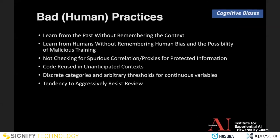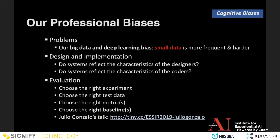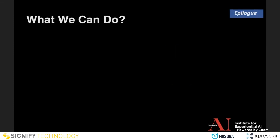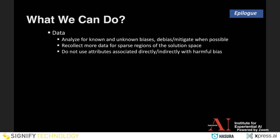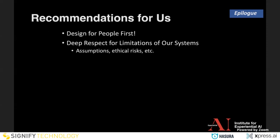We have several human cognitive biases and professional biases to consider. There are papers showing that the biases of coders are transferred to the code — so this is much more complicated than we think. What things can we do? We should analyze for known and unknown biases, recollect more data in sparse regions, not use attributes directly associated with known bias, have the system aware of the problem, and have the users aware of the problem.